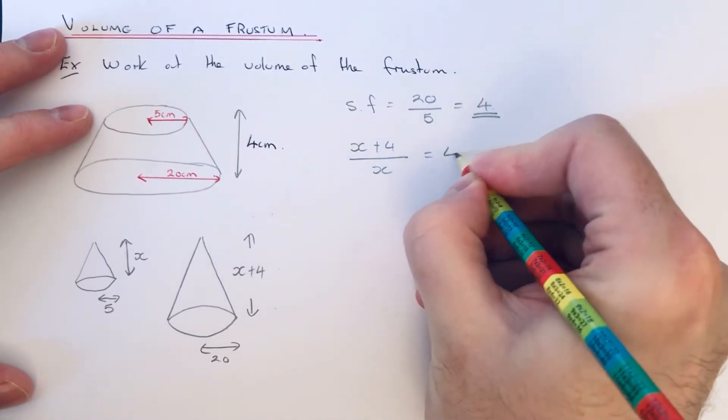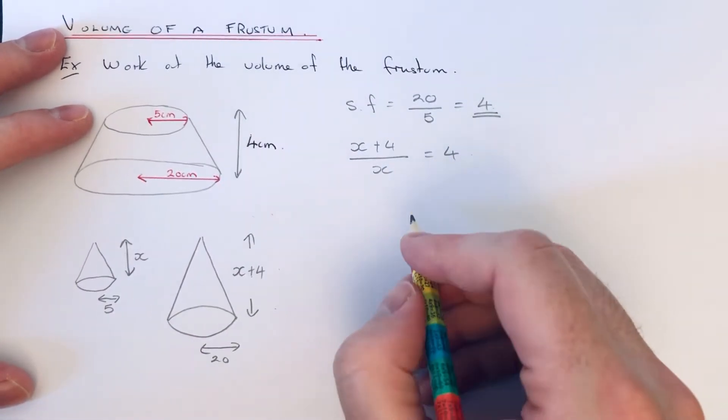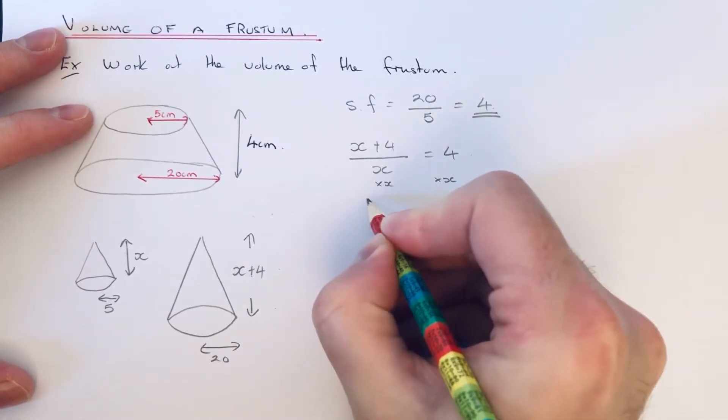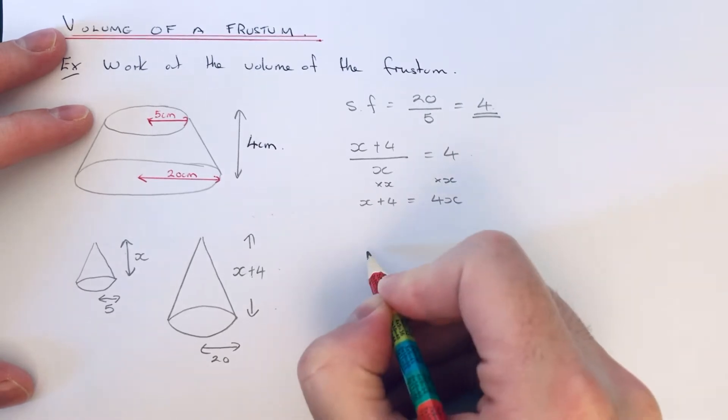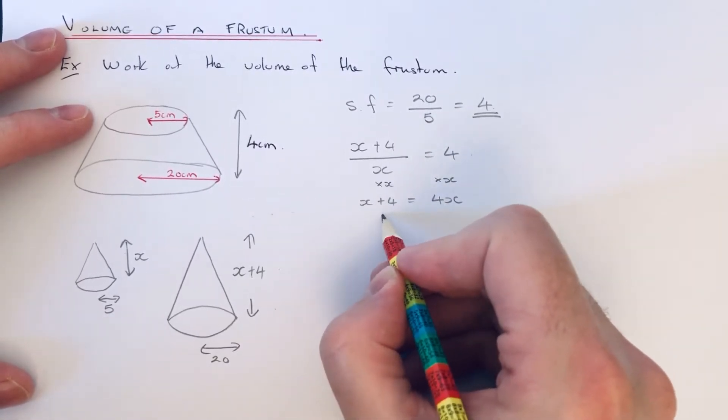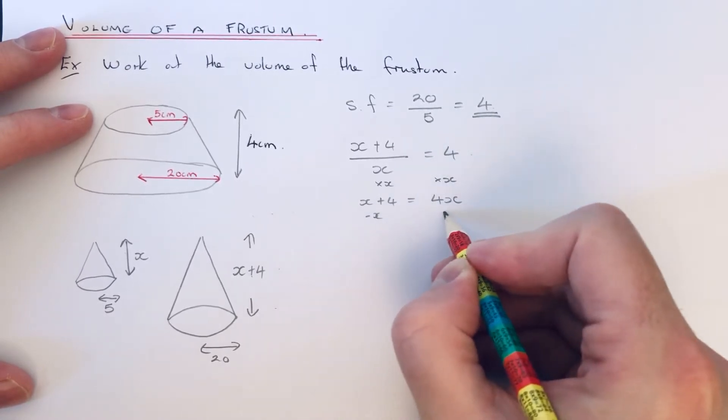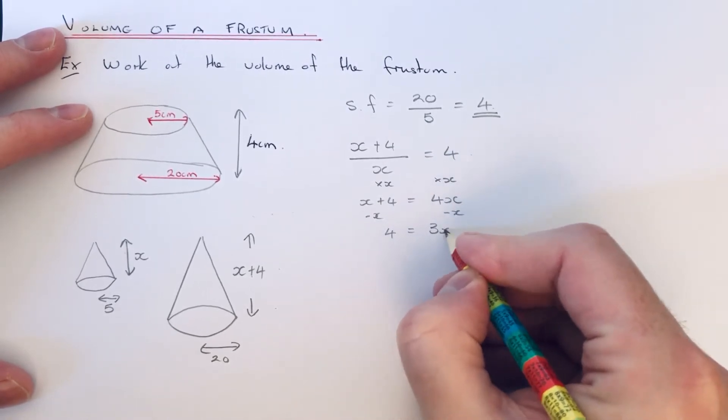So we get X plus 4 over X equals 4. We just need to solve this equation. If we times both sides by X, that will give us X plus 4 equals 4X. And then it's just an equation with X's on both sides. If we take X off both sides, that will give us 4 equals 3X.